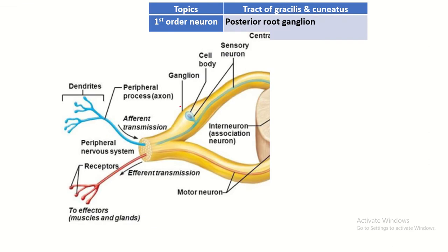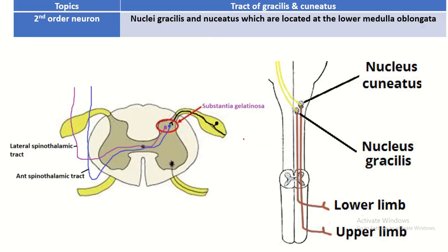The first-order neuron: like other sensory pathways, the first-order neuron is located in the posterior root ganglia. This is the pseudounipolar neuron with a single process. This is the peripheral process — the terminal portion of the peripheral process is converted into a receptor. This is the central process within the spinal cord.